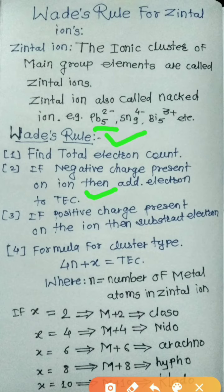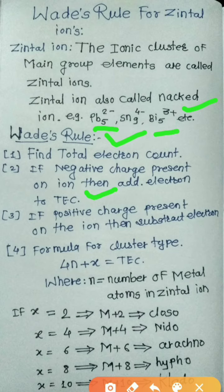Rule number three: if a positive charge is present on the ion, subtract electrons. For example, in the case of Bi₅³⁺, a 3-positive charge is present, so subtract 3 electrons from the total electron count. Rule number four is the formula for the cluster type: 4n + x = total electron count.